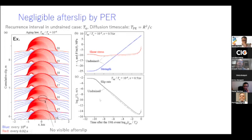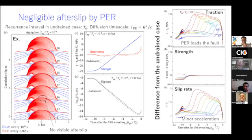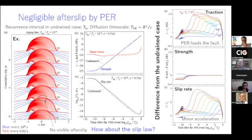Comparing traction, strength, and slip rate at the center of the fault for different diffusion coefficients, we see some loading of about one megapascal. Strength doesn't change much because in this period the aging term dominates and the change in slip rate doesn't affect strength evolution. Slip rate increases by a factor of two or three, which I would say is minor. So it seems that strengthening or healing dominates and suppresses any significant afterslip.